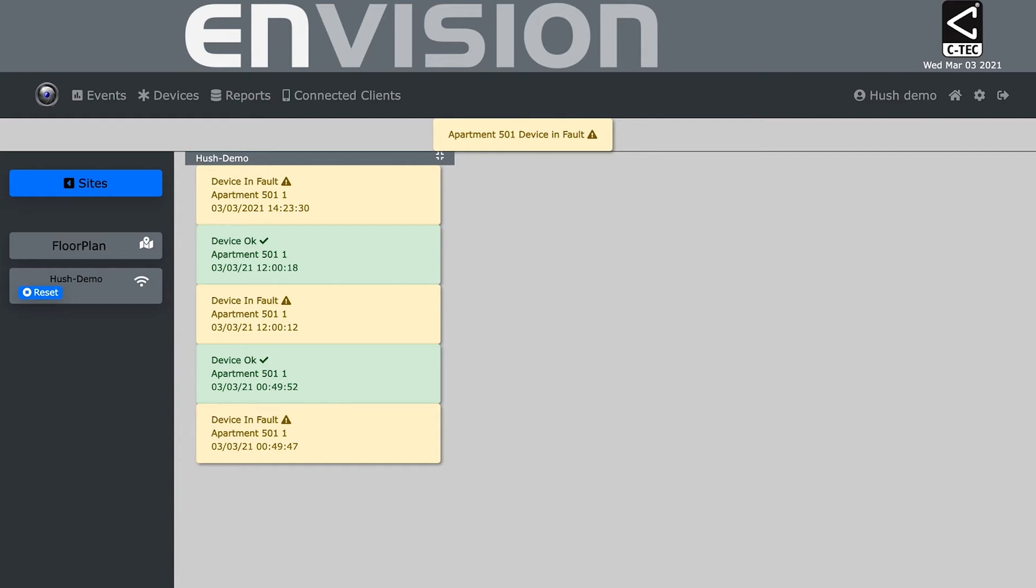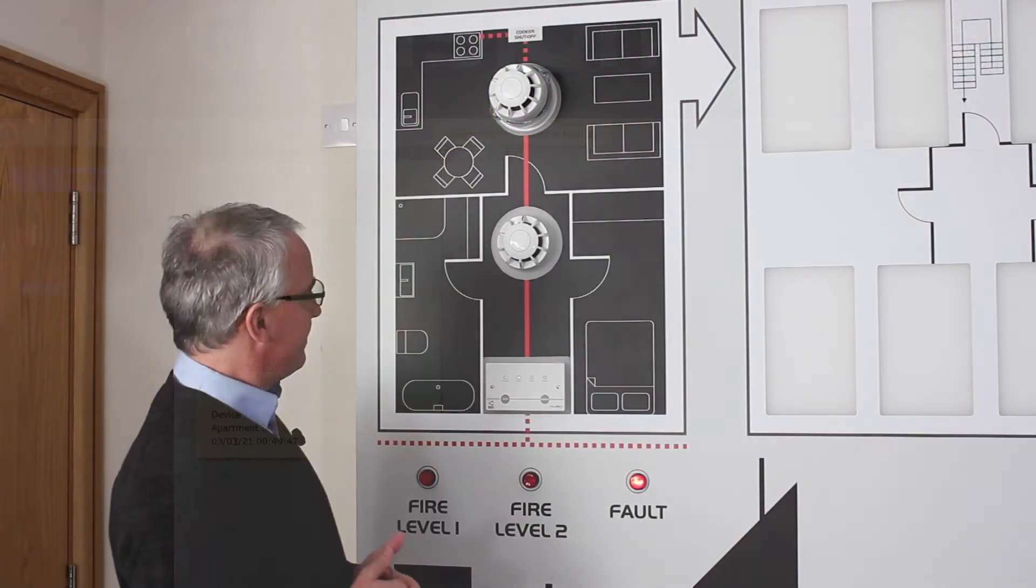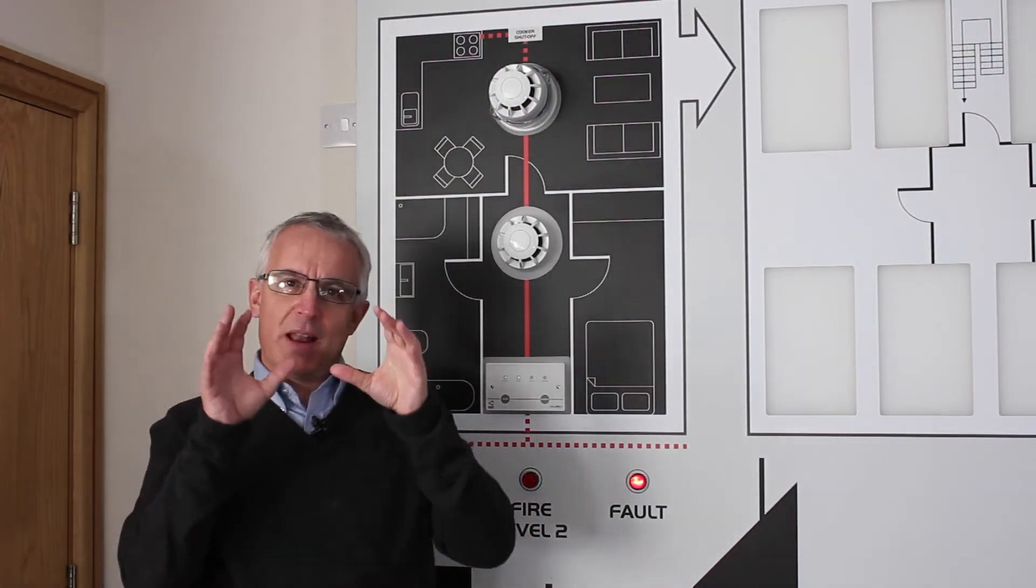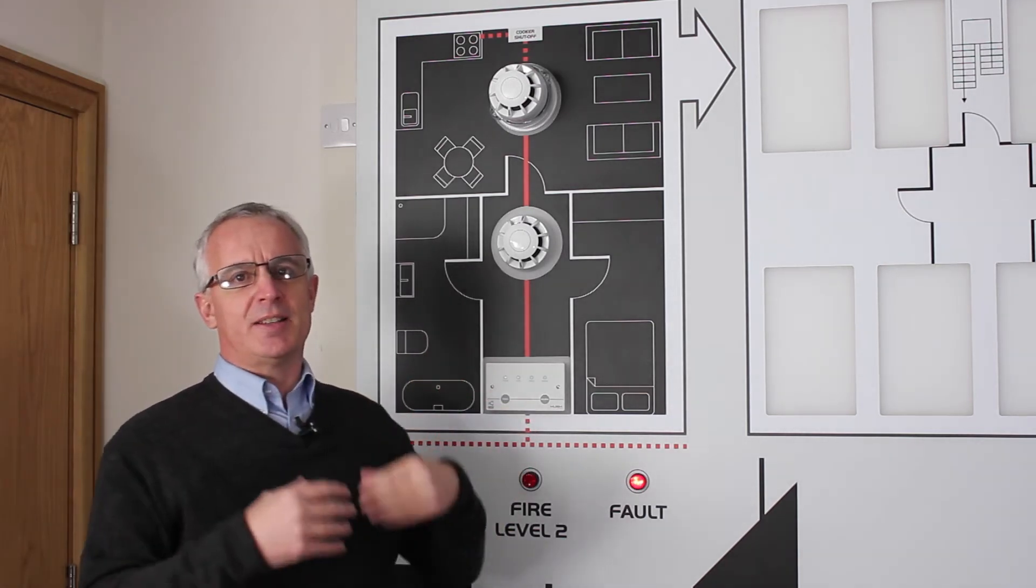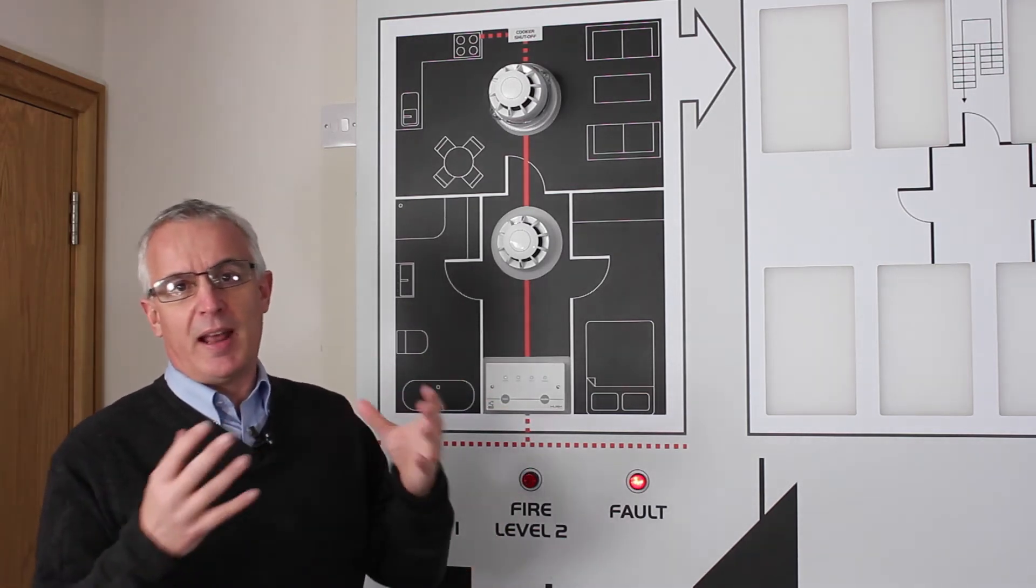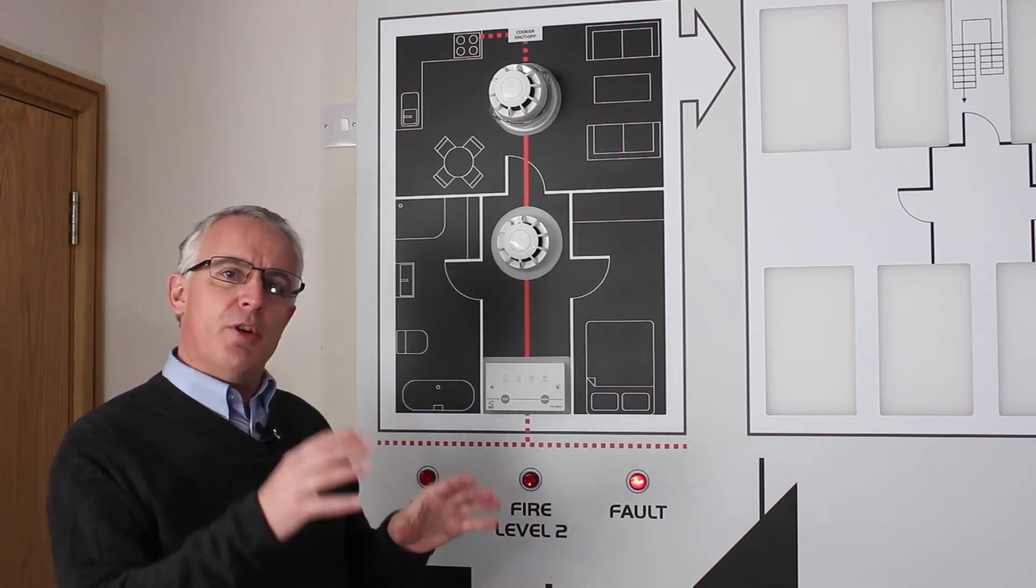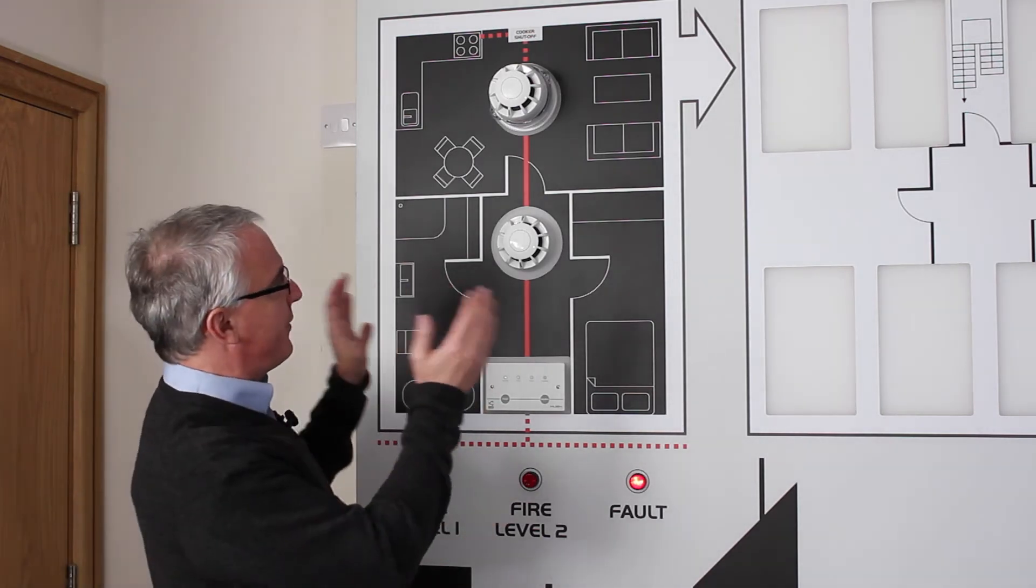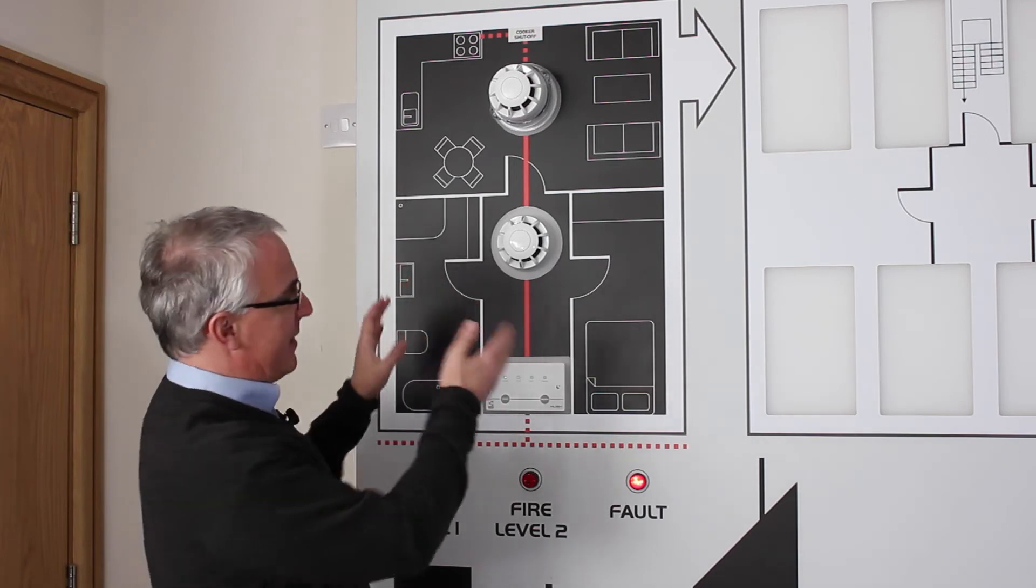The occupant can still silence the fault for 24 hours, but the fact that it's been logged at the panel and off-site means the responsible person, the landlord, does know that potentially there's a compromised fire alarm system in that particular dwelling.